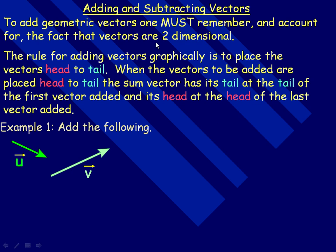In this lesson, we'll take a look at adding and subtracting vectors graphically, and we'll talk about adding first. To add geometric vectors — that means a directed line segment or arrow drawn on paper — one must remember that vectors are two-dimensional. They have a horizontal part and a vertical part. When we draw them on a flat surface like this, that's a two-dimensional surface with a length and a width.